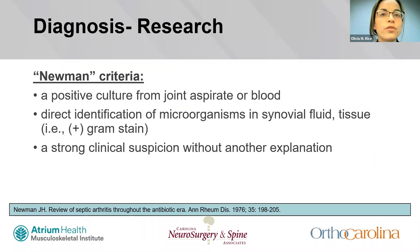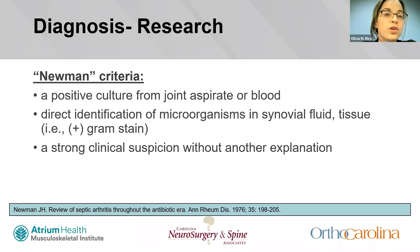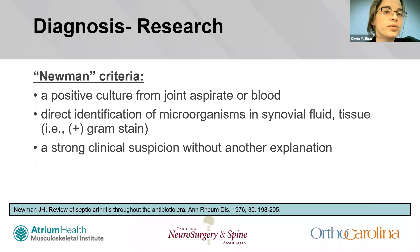The finding of three out of 50 patients with both septic arthritis and positive crystals is fairly consistent throughout the literature. It's also worth noting that Newman criteria were often cited as a study's definition of septic arthritis, including a positive culture from joint aspirate or blood, direct identification of microorganisms in synovial fluid or tissue, or strong clinical suspicion without a more reasonable explanation. While these criteria are useful for research, little evidence exists to support their routine use to guide treatment.